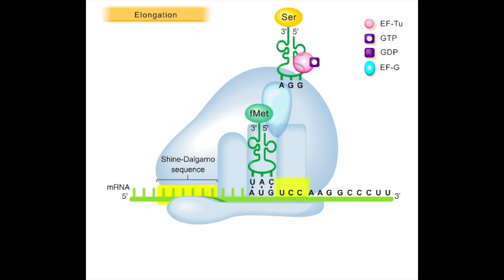This seryl tRNA-EF-TU-GTP complex enters the A site where the tRNA anticodon forms hydrogen bonds with the UCC codon.